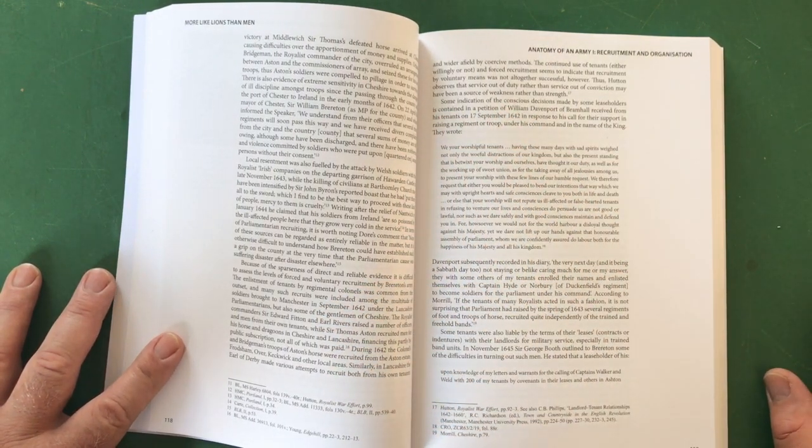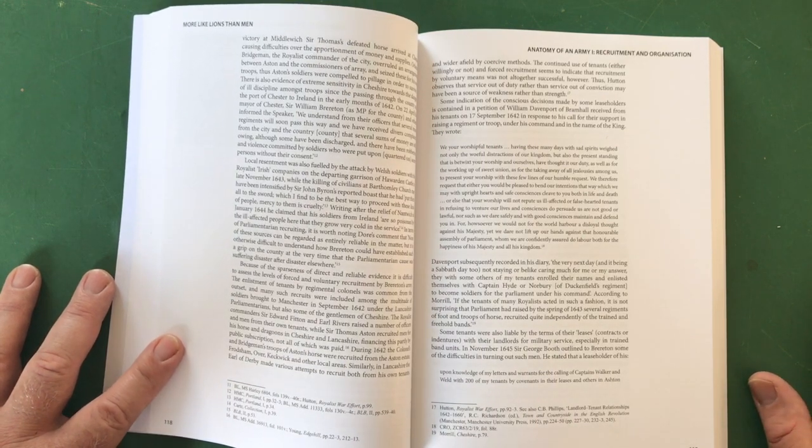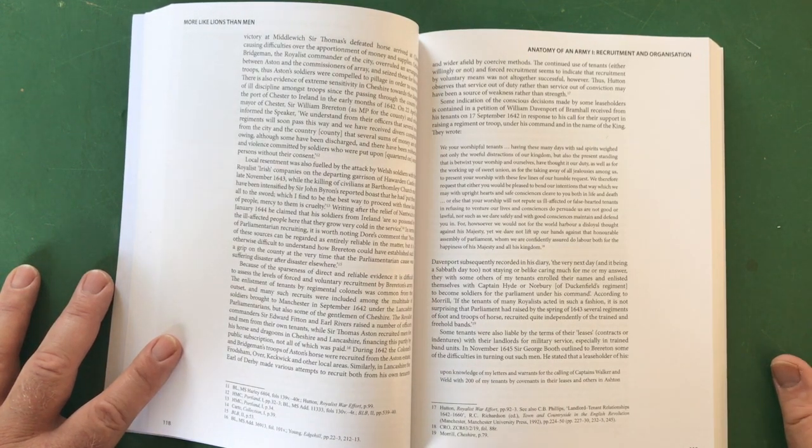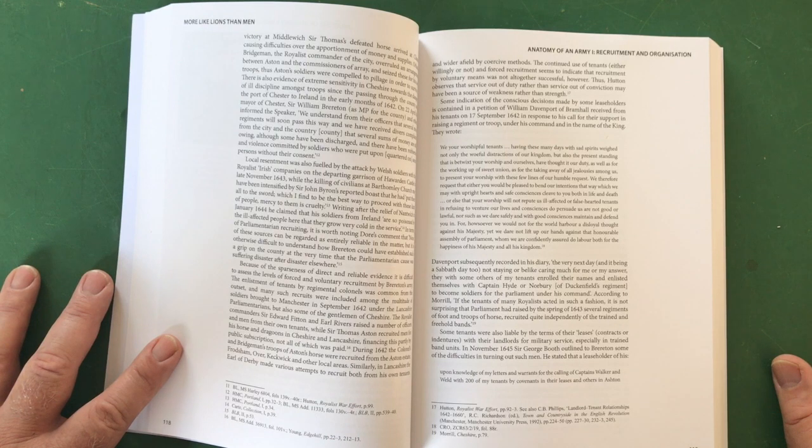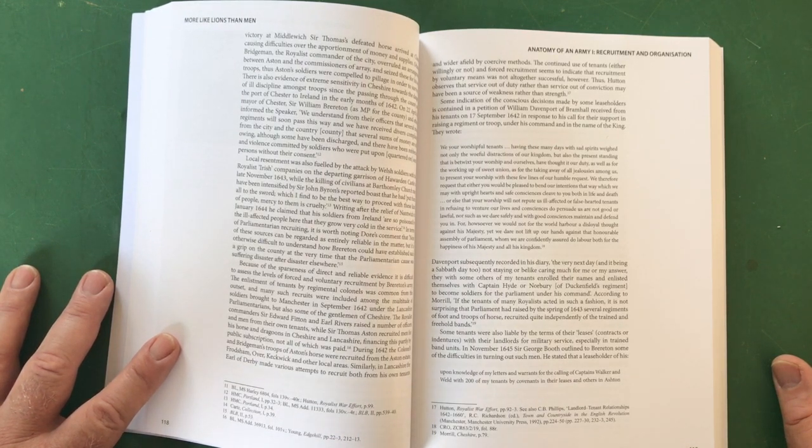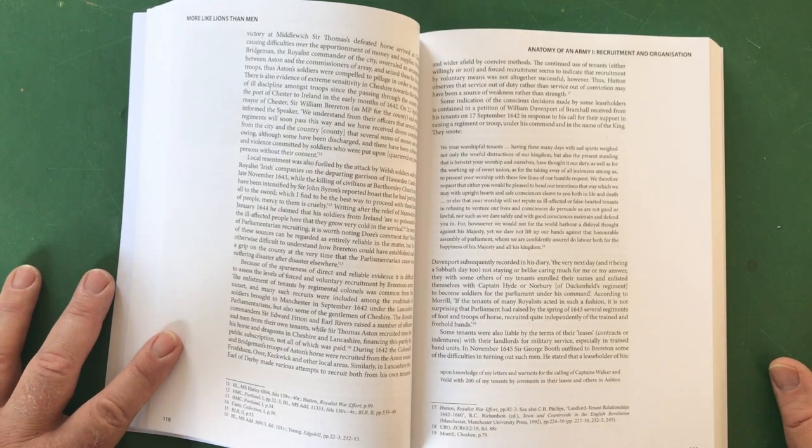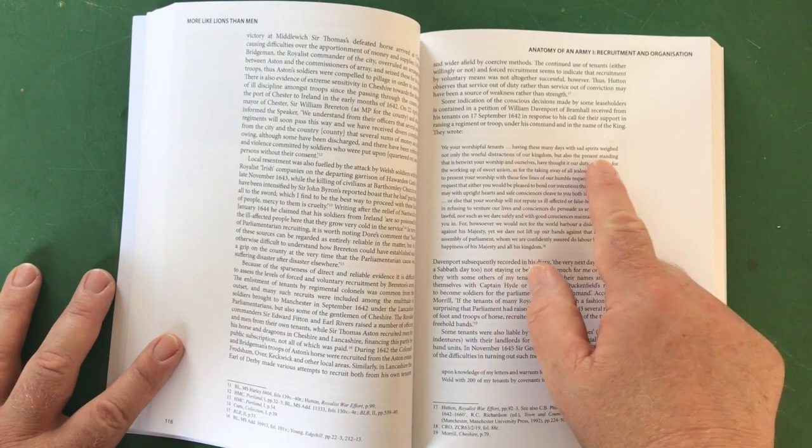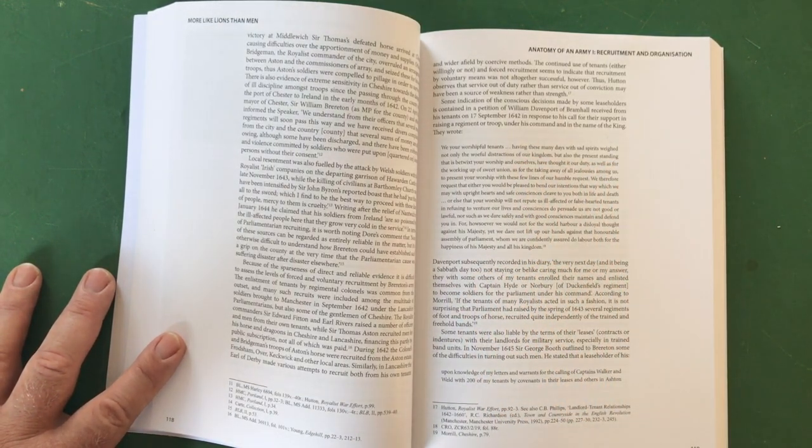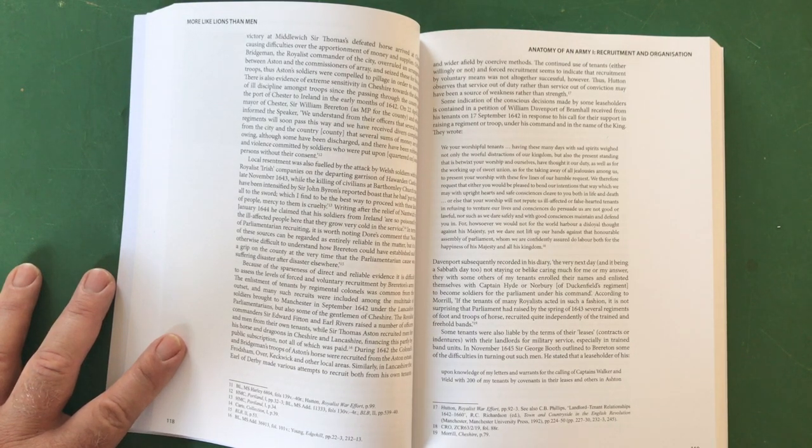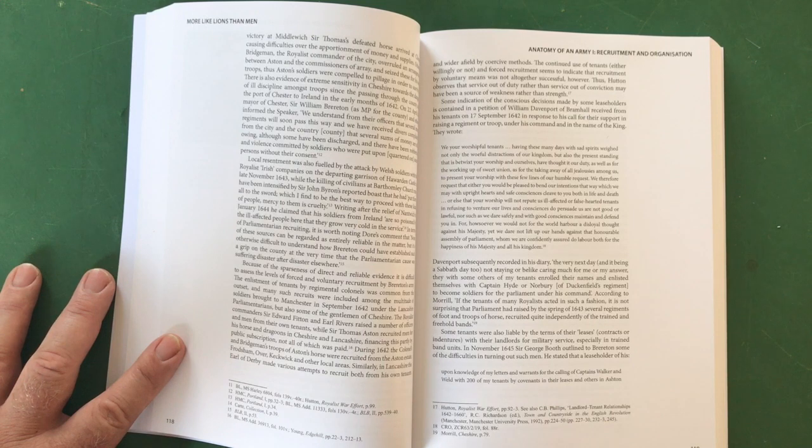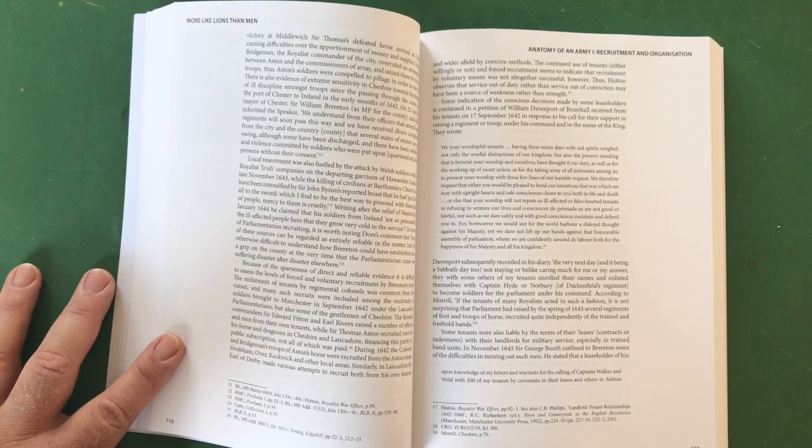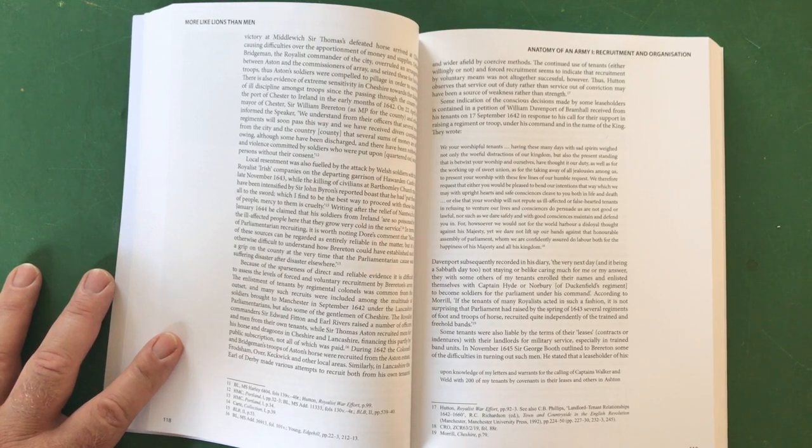Lovely illustration. Then we've got lots of quite interesting quotations coming. Here we go: 'Some indication of the conscious decisions made by some leaseholders is contained in a petition of William Davenport of Bramhall received from his tenants on 17th of September 1642 in response to his call for their support in raising a regiment or troop under his command in the name of the king. They wrote: We your worshipful tenants having these many days with sad spirits weighed not only the woeful distractions of our kingdom but also the present standing that is betwixt your worship and ourselves...'